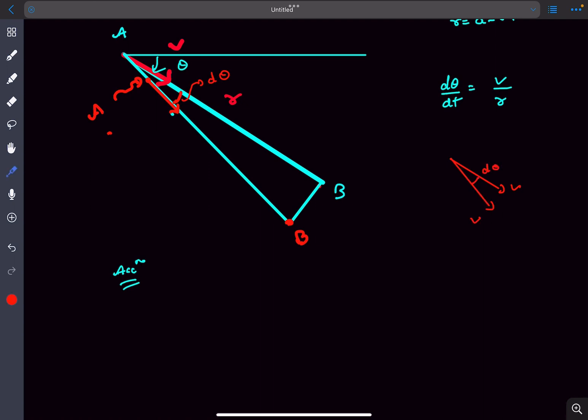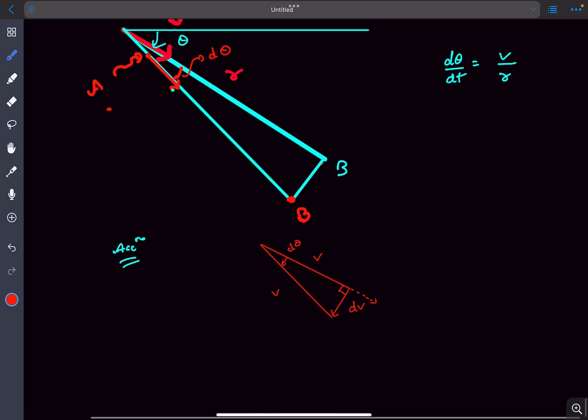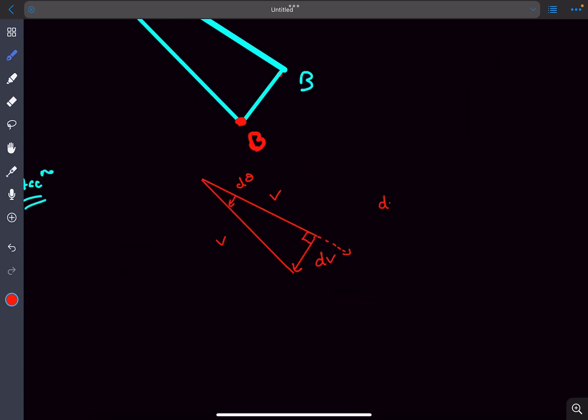Clearly there won't be any tangential acceleration for any of these particles because the magnitude of the velocity is remaining constant. There is only normal acceleration in this case. A's velocity vector was initially in this direction. It rotated by an angle of d theta. So the dv vector would be in this direction, the change in velocity. This dv vector would be perpendicular to the initial v vector. The reason for that is there cannot be a component of dv in the tangential direction, otherwise the speed will change. This is the arc length, so we can say dv equals v times d theta.